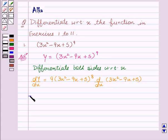This implies dy/dx equals 9(3x² - 9x + 5)^8 times—d/dx of 3x² will be 6x minus d/dx of 9x will be 9.